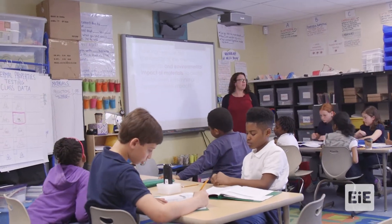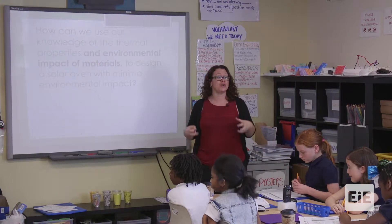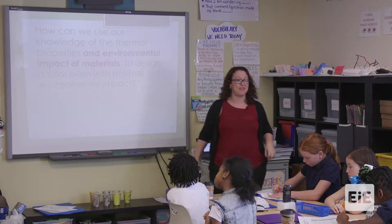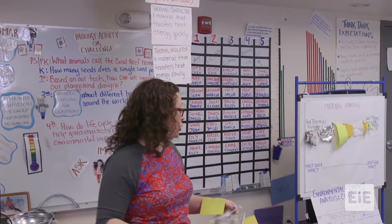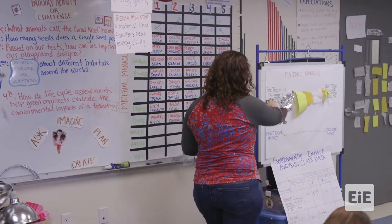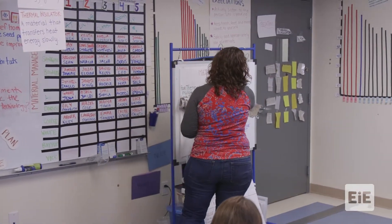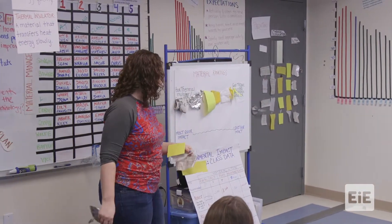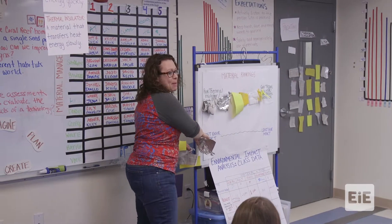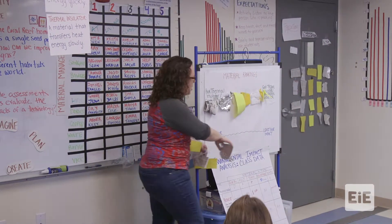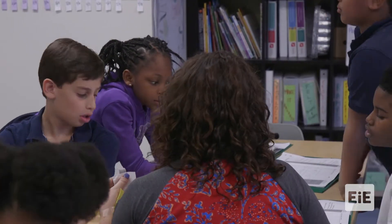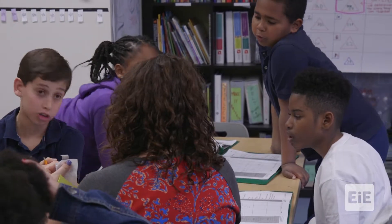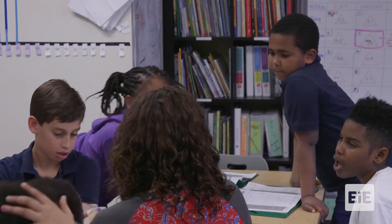Now that we know this, what are the environmental impacts of these materials? Once we have all of that information, you're going to choose what to put in your solar oven to make it cook the best. We need to rank things from poor to good thermal insulator, and also decide which negatively impacts the environment most and which have the least environmental impact. Which ones can't you recycle? You can't recycle felt, so felt might be the worst. Can you recycle foam? No.